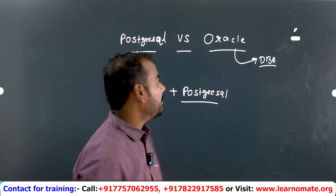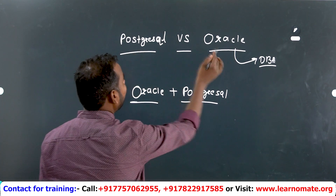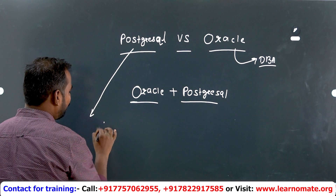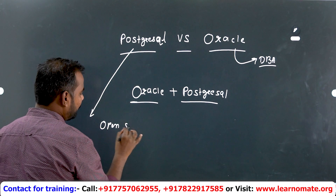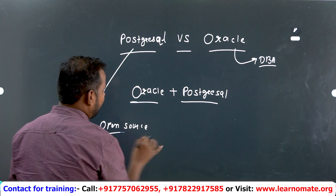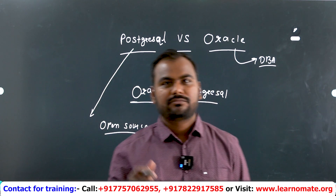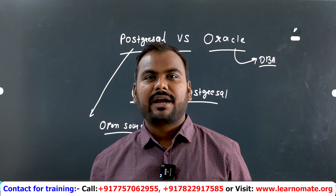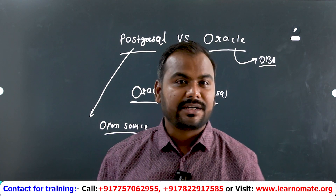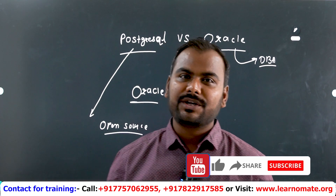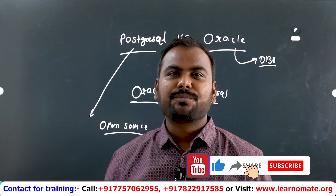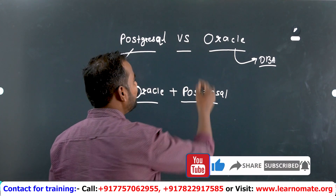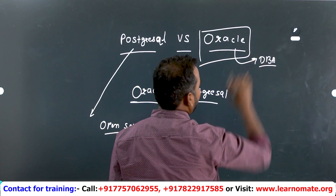The first thing you need to understand is the difference between PostgreSQL and Oracle. The main difference is that PostgreSQL is open source — open source means you can take the code of this database, you can modify it and make changes. Anything which is open source is completely free of cost; you don't need to pay any licensing cost. When it comes to Oracle, however, Oracle is not free of cost.